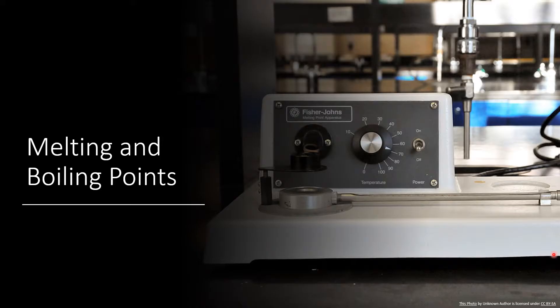Another property that we can observe for a substance is its melting point or its boiling point. This particular apparatus that's shown in this photograph is used for measuring the melting point.